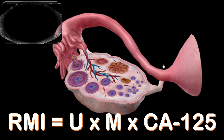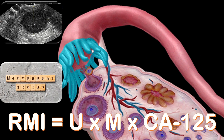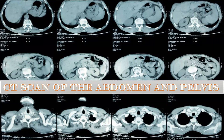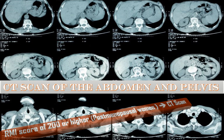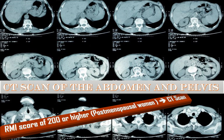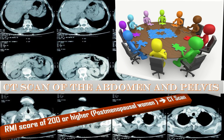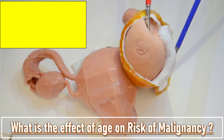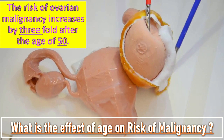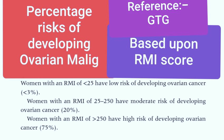CT of the abdomen and pelvis should be performed for all postmenopausal women with ovarian cysts who have an RMI 1 score of ≥200, with onward referral to the gynecological oncology multidisciplinary team. The risk of ovarian malignancy increases threefold after the age of 50. Based on RMI score: women with RMI less than 25 have low risk (less than 3%); RMI of 25–250 carries moderate risk (approximately 20%); and RMI greater than 250 carries high risk of ovarian cancer (approximately 75%).